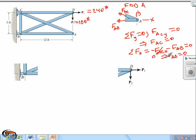Next, we're going to analyze joint D because it only has two unknowns. So we have the force from D to C and the force from D to B.